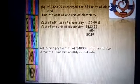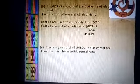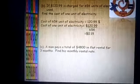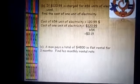Now part C. A man pays a total of $4800 in flat rental for 3 months. Find his monthly rental rate. Rent for 3 months is $4800.